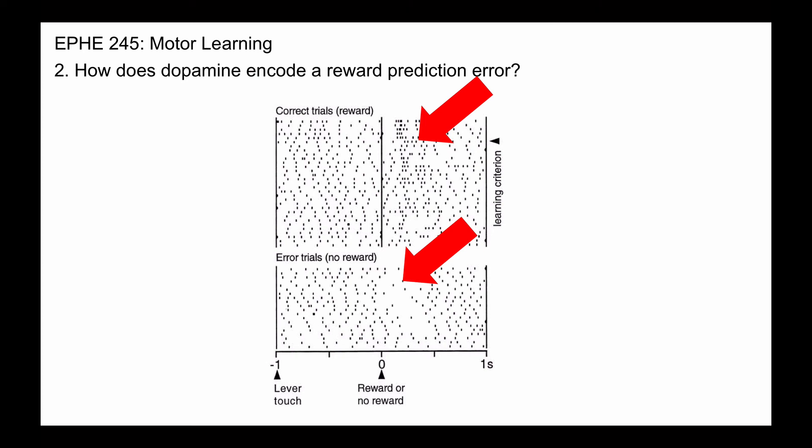Now the literal truth is, at this time, they weren't really thinking in terms of prediction errors. They were just thinking in terms of increases in firing rate for positive events and decreases in firing rate for negative events. The prediction error piece will become more apparent after the next video.